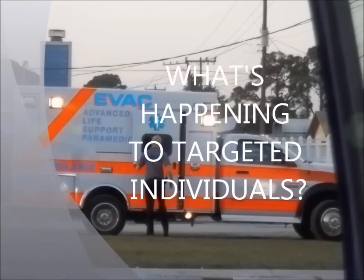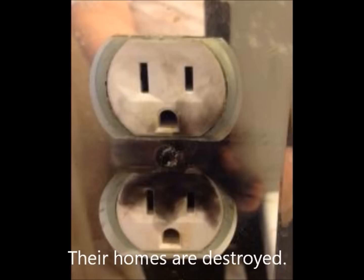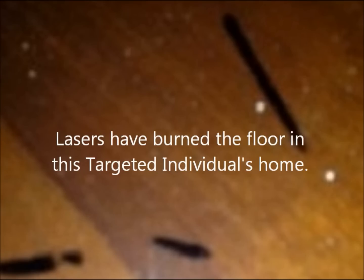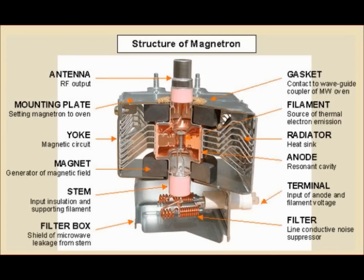What's happening to targeted individuals? Their homes are destroyed. Lasers have burned the floor. Some have had magnetrons installed nearby or in their attics to radiate them with microwaves. Magnetrons are extremely heavy because of the magnets inside. They generate microwaves that can cause cataracts, blindness, and other physical symptoms.